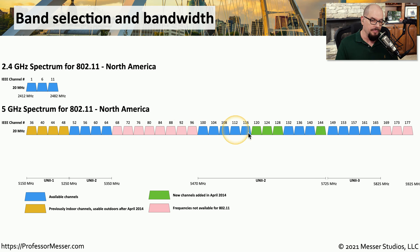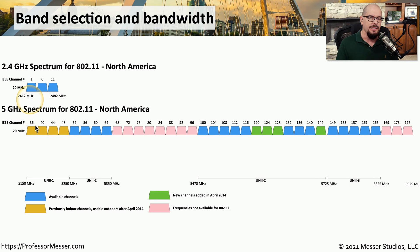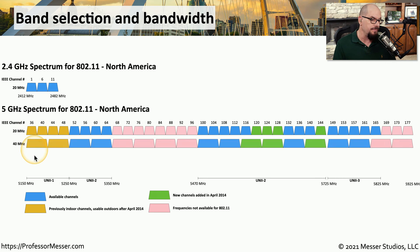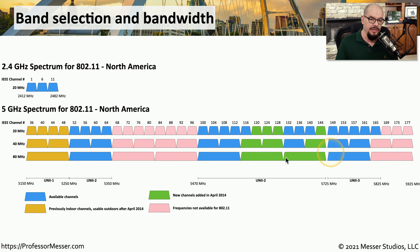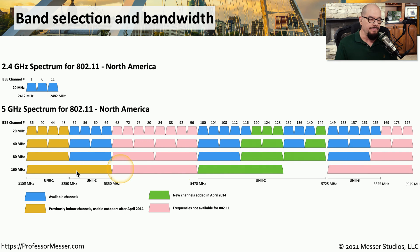When we introduced the 5 gigahertz range, we also introduced a large number of available frequencies. There are many more frequencies available in the 5 gigahertz range than the three 20 megahertz non-overlapping groups in 2.4 gigahertz. Some wireless standards allow us to use larger bandwidths such as 40 megahertz, 80 megahertz, and even 160 megahertz. At 160 megahertz, there are only two contiguous channels available on the 5 gigahertz spectrum.